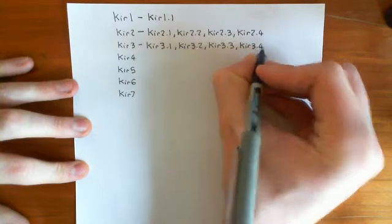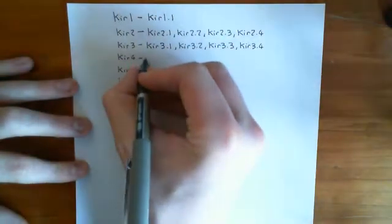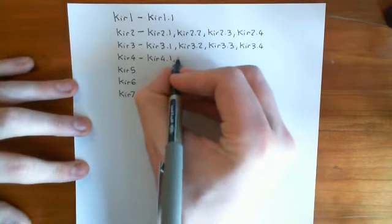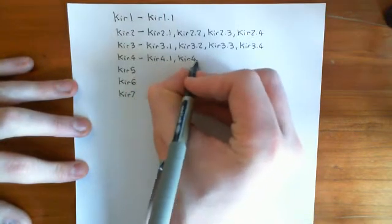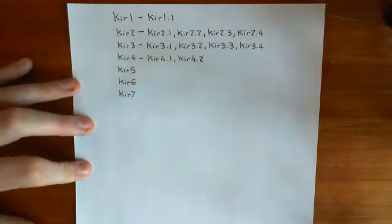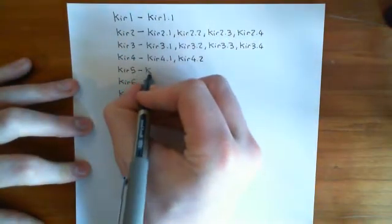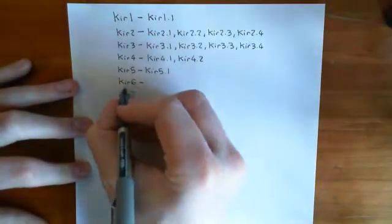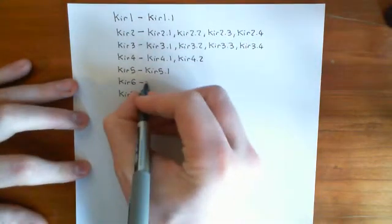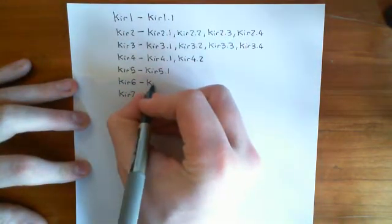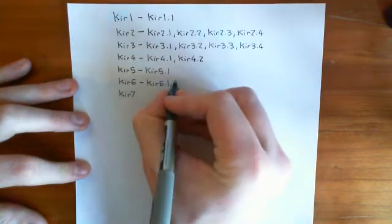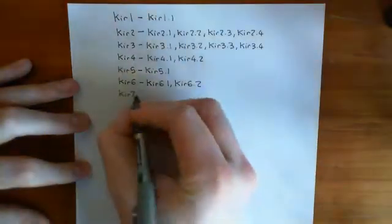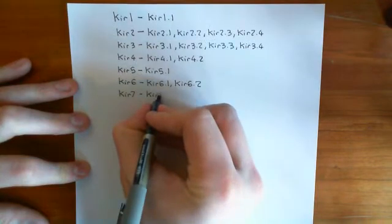In the KIR4 family there are two members: KIR4.1 and KIR4.2 — you're hopefully getting the idea that they're all named very sensibly. In the KIR5 family there's only one member, KIR5.1. In the KIR6 family, which is going to be very important to us because this is the ATP-sensitive potassium channel family, there is KIR6.1 and KIR6.2. And finally in the KIR7 family there's just one member, KIR7.1.